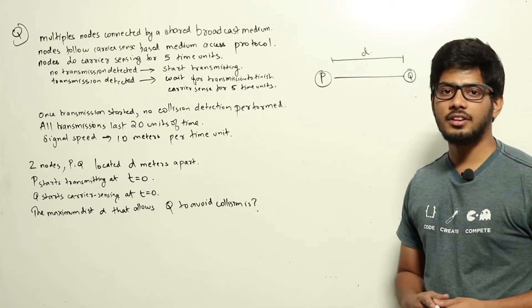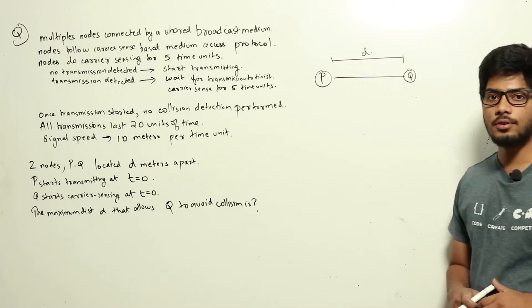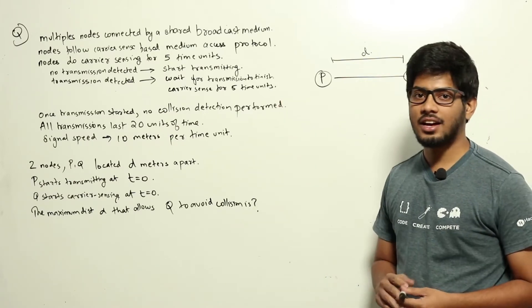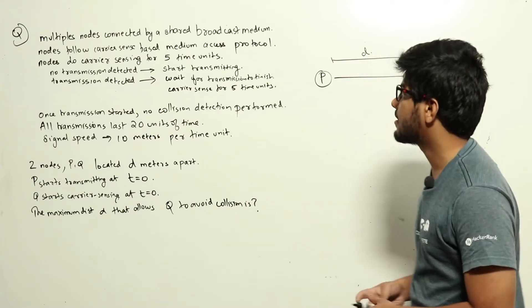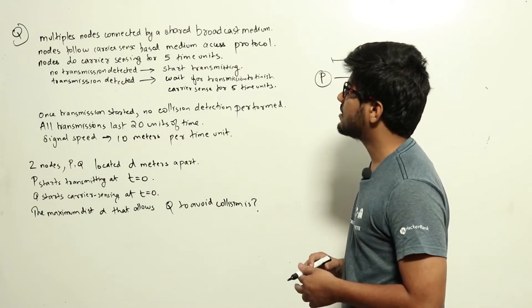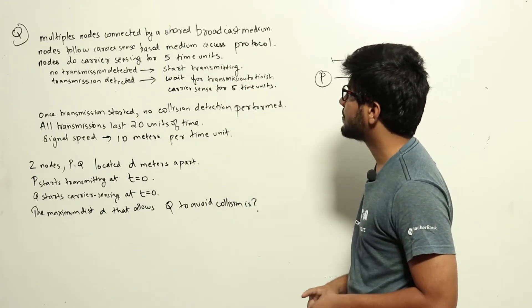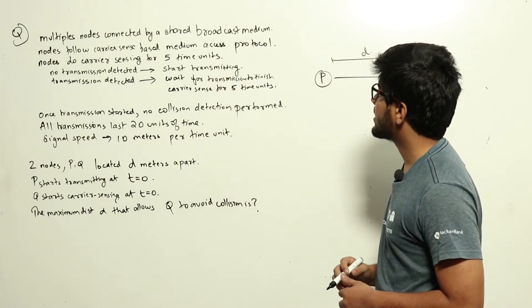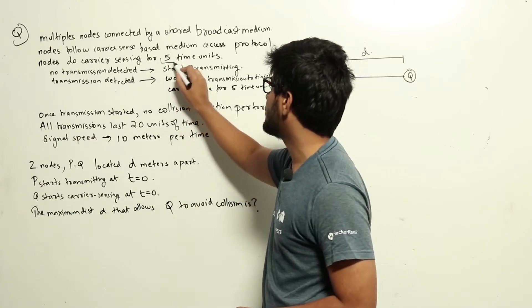This is a question from computer networks regarding carrier sense based medium access protocol. The question text is lengthy; here is the summary. Multiple nodes are connected by a shared broadcast medium. Nodes follow carrier sense based medium access protocol and perform carrier sensing for five time units.